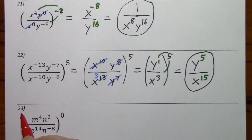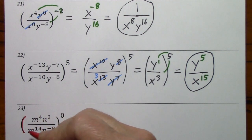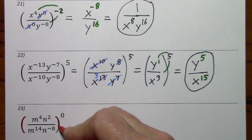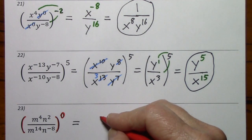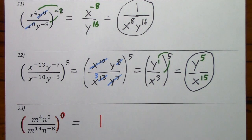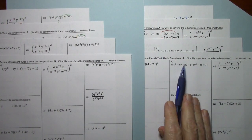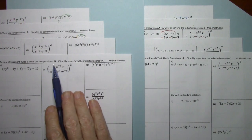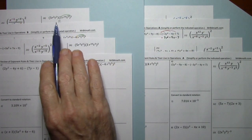And finally, looking at 23: everything in parentheses is raised to the zero power. Anything raised to the zero power is one. If you would like some practice with these concepts, I have two worksheets each with detailed answer keys.